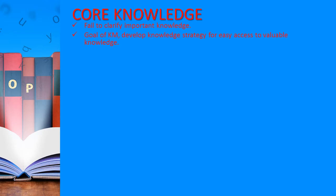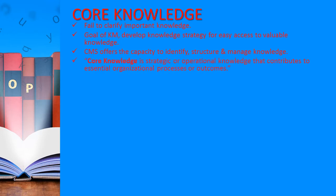Many organizations fail to clarify what knowledge is important to their business, which can reduce employees' capacity, opportunity, or desire to share their professional knowledge. A goal of Knowledge Management is to develop a knowledge strategy identifying important knowledge so that employees are aware of the need to manage it appropriately as both distributors and users. The CMS offers the capacity to identify, structure, and manage knowledge important to organizational outcomes, linking it to business strategy and ensuring valued knowledge is accessed by appropriate users at the right time.